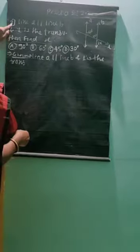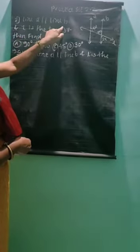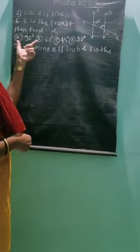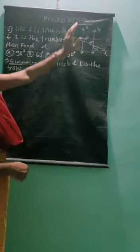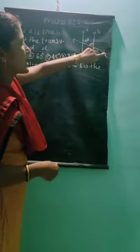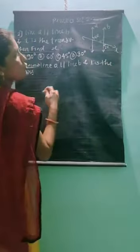Let us consider the second question. Given that line A is parallel to line B and L is the transversal, find X. In the figure, A is parallel to B and line L is the transversal. The two angles given are 4X and 2X.